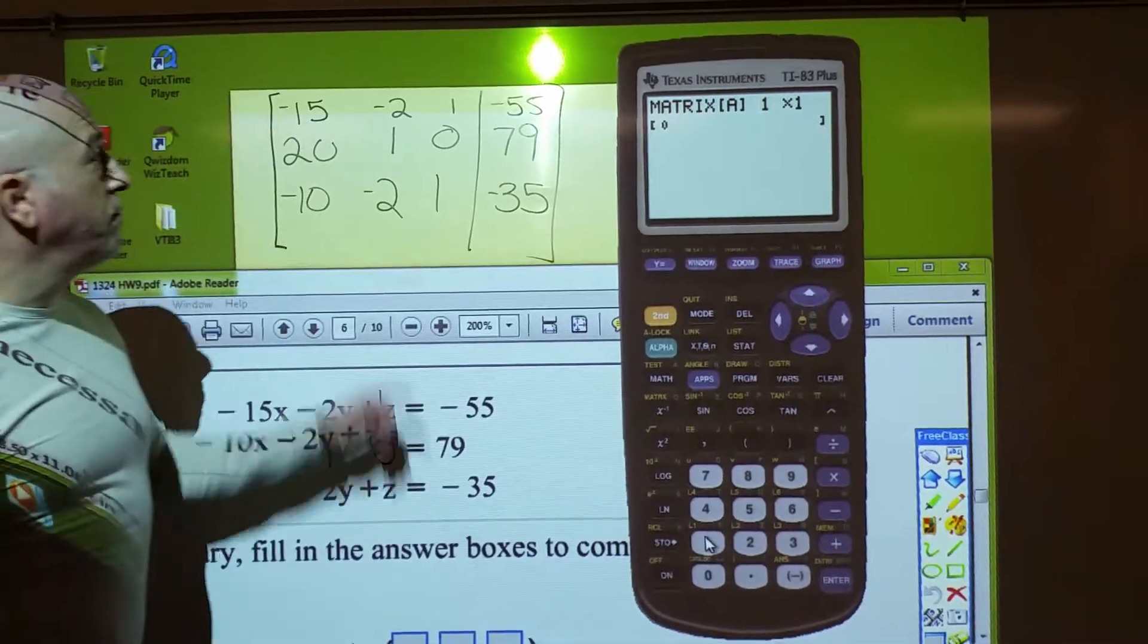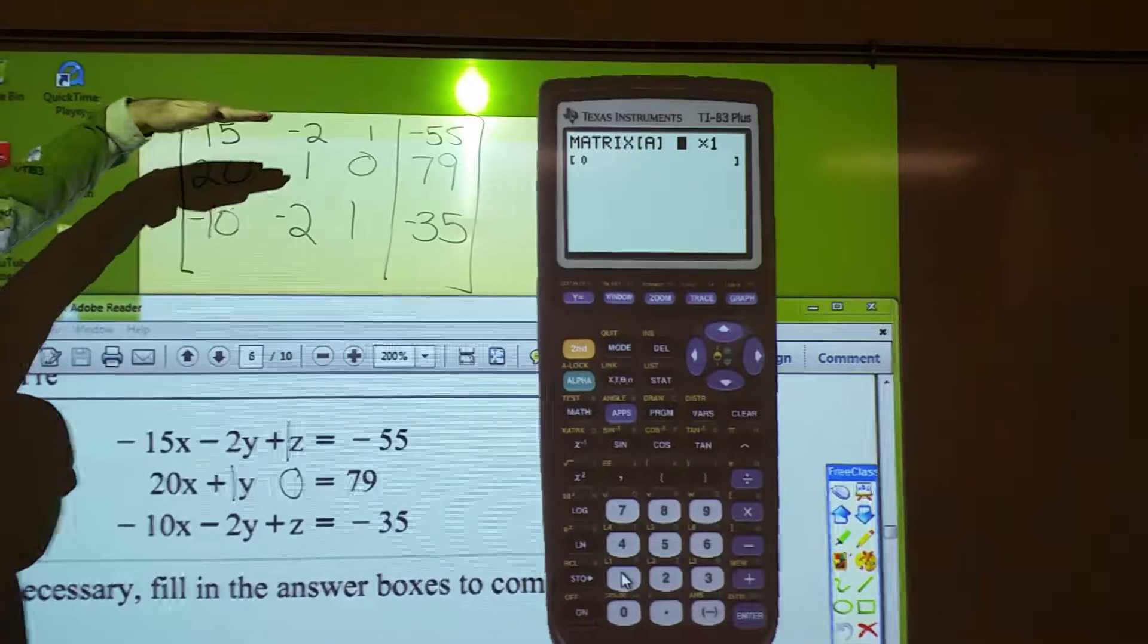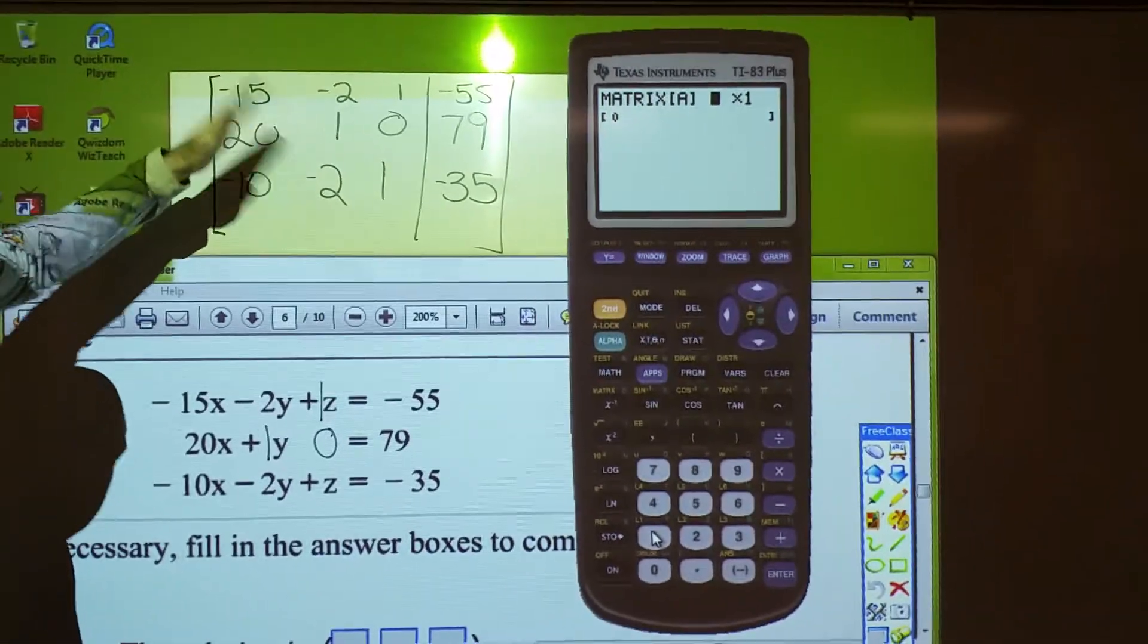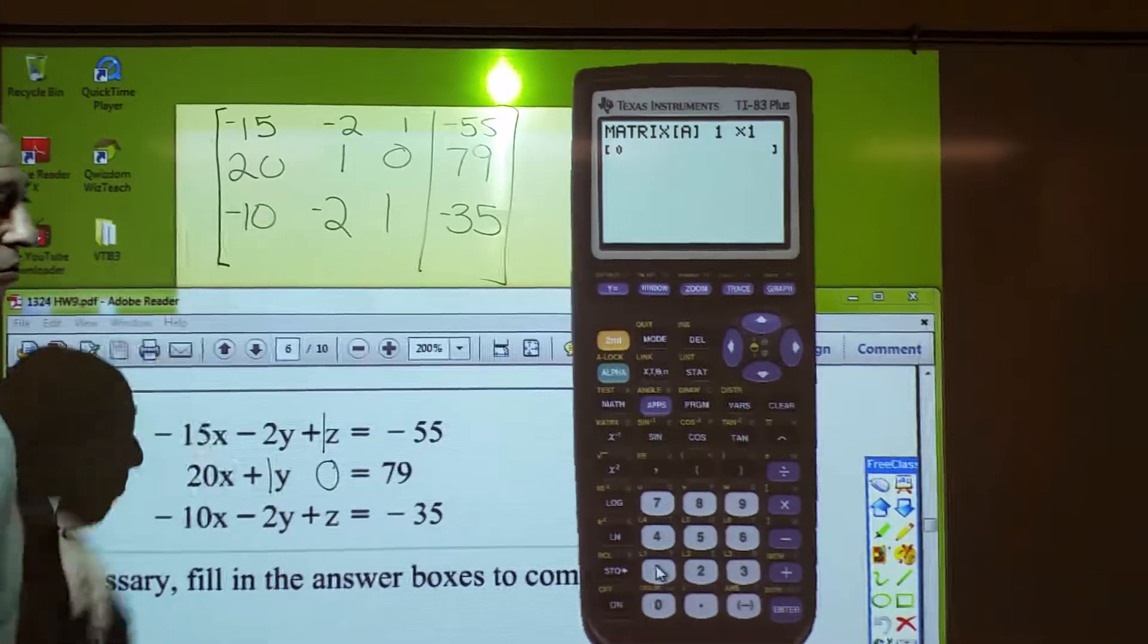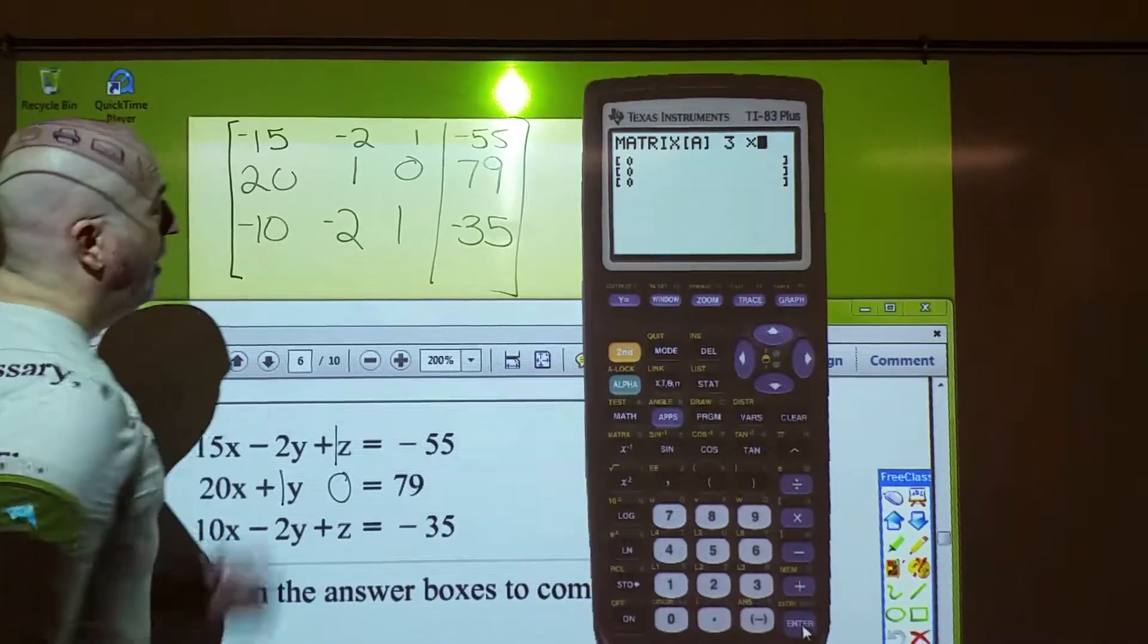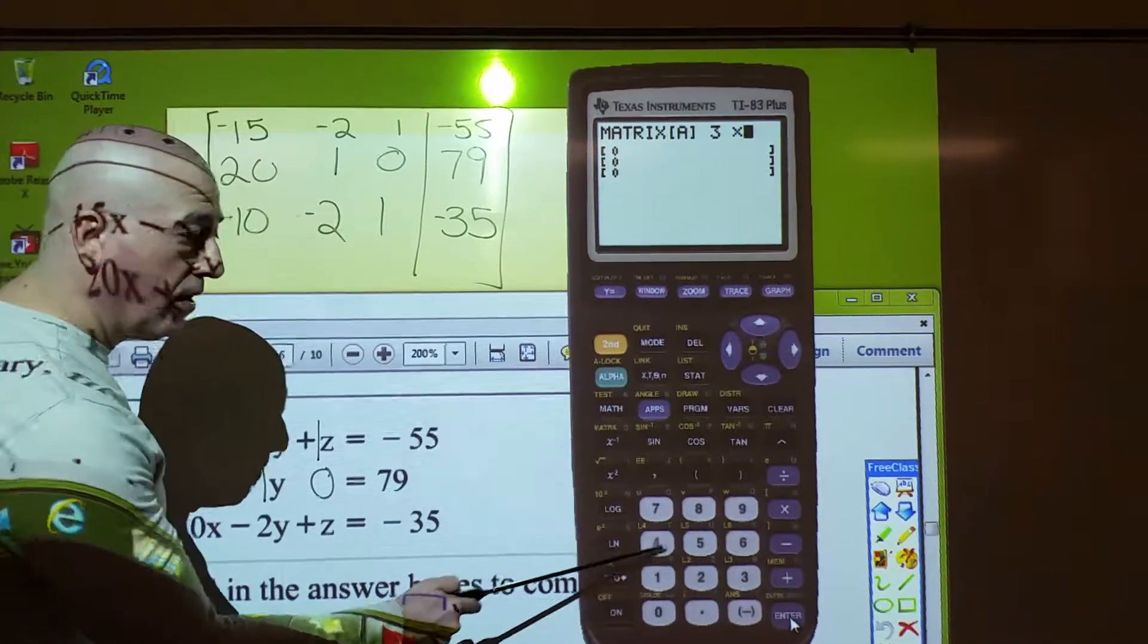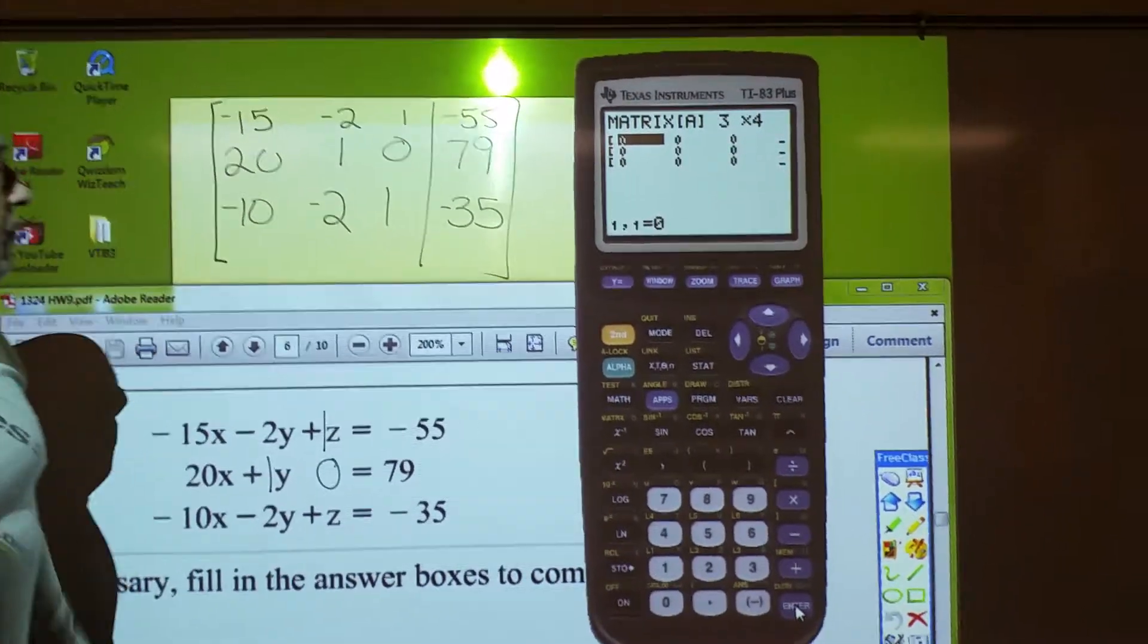And the first thing you do is put the size of the matrix. Remember how we state the sizes. You go rows and then columns. This one has three horizontal rows, three, enter, and four vertical columns.